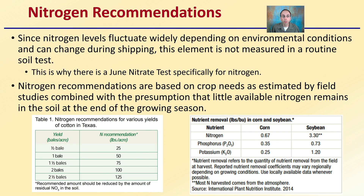When looking at nitrogen recommendations related to a soil test, keep in mind that since nitrogen levels can fluctuate widely depending on environmental conditions, it can change during the shipping process as the soil sample goes from where you sampled it to the lab. This element is not measured in a routine soil test. This is why there is a June nitrate test, which tests specifically and only for nitrogen. Nitrogen recommendations are based on crop needs estimated by field studies combined with the presumption that little available nitrogen remains in the soil at the end of the growing season. Examples include nitrogen removal in pounds per bushel for crops like corn and soybeans.